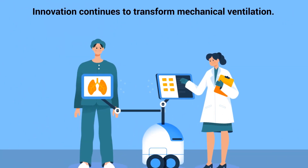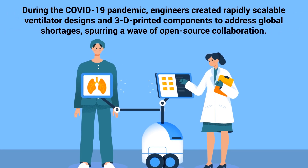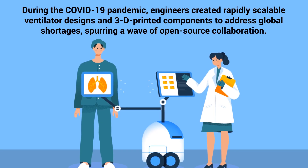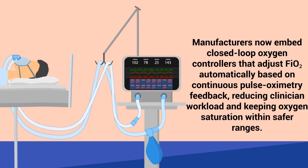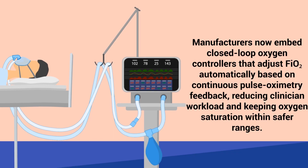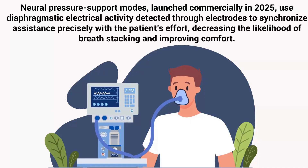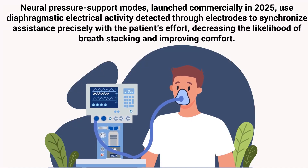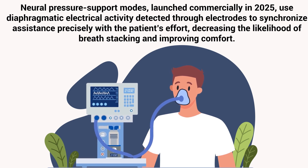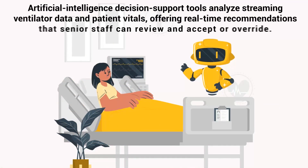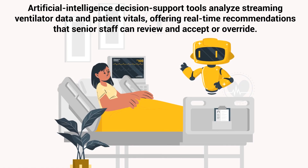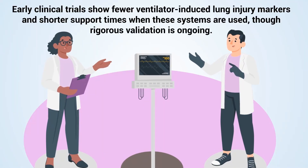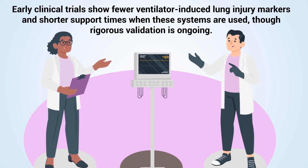Innovation continues to transform mechanical ventilation. During the COVID-19 pandemic, engineers created rapidly scalable ventilator designs and 3D-printed components to address global shortages, spurring a wave of open-source collaboration. Manufacturers now embed closed-loop oxygen controllers that adjust the FiO2 setting automatically based on continuous pulse oximetry feedback, reducing clinician workload and keeping oxygen saturation within safer ranges. Neural pressure support modes, launched commercially in 2025, use diaphragmatic electrical activity detected through electrodes to synchronize assistance precisely with the patient's effort, decreasing the likelihood of breath stacking and improving comfort. Artificial intelligence decision support tools analyze streaming ventilator data and patient vitals, offering real-time recommendations that senior staff can review and accept or override. Early clinical trials show fewer ventilator-induced lung injury markers and shorter support times when these systems are used, though rigorous validation is ongoing.